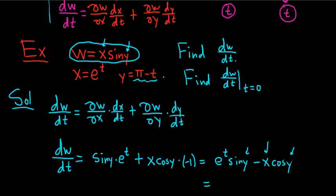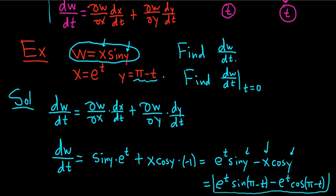So what we can do now is we can replace everything here with t's. So this is e to the t. And then sine y, that's going to be sine of pi minus t. Okay? And then minus x, so that's going to be e to the t. And then cosine y, that's cosine of pi minus t. Okay?